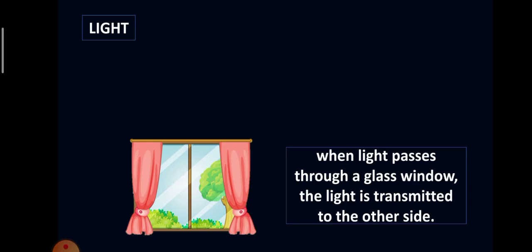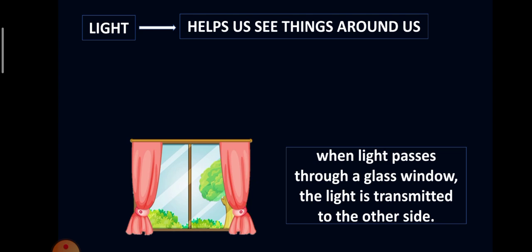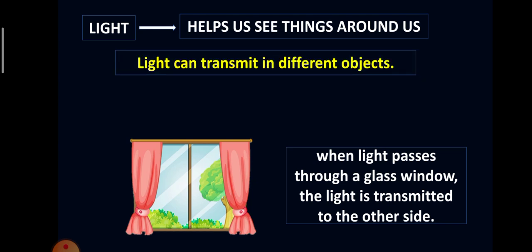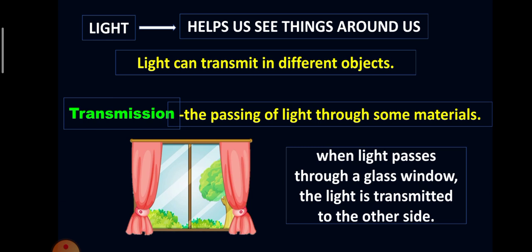Light is very important. It helps us see things around us. Light can transmit in different objects. Transmit from the word transmission, which means the passing of light through some materials. Like when light passes through a glass window, the light is transmitted to the other side. We are able to see things behind the glass window.